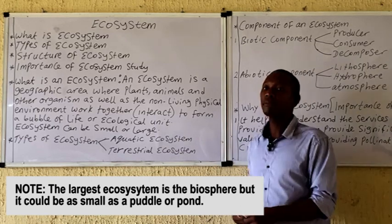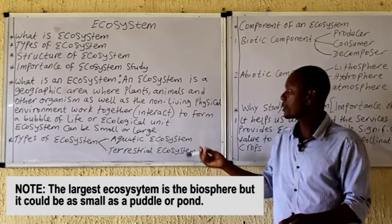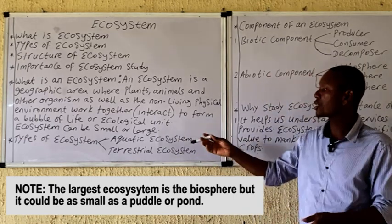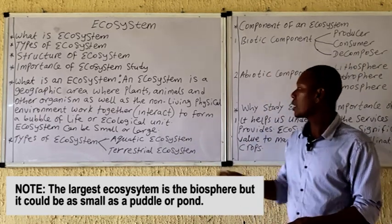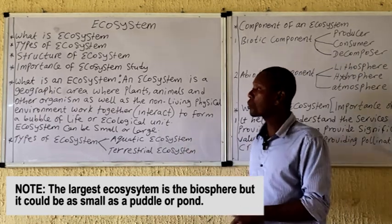What are the types of ecosystem? We have the aquatic ecosystem, as being displayed, and we have the terrestrial ecosystem.